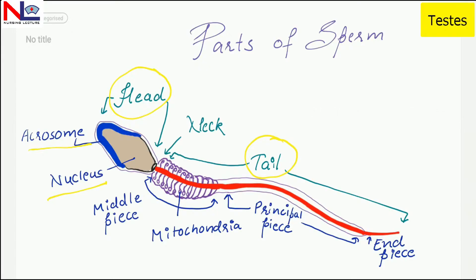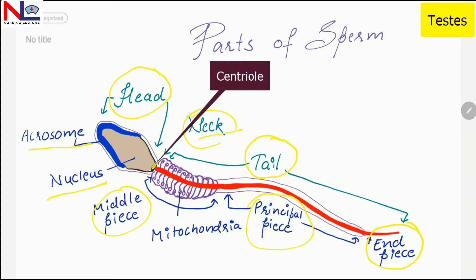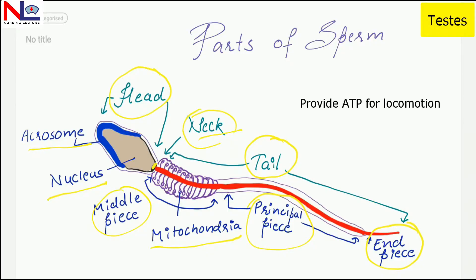The tail of the sperm is divided into the neck region, the middle piece, the principal piece, and the tapering end piece. The narrow neck region just behind the head consists of centrioles. Behind that is the middle piece, which consists of mitochondria providing energy as ATP for the locomotion of sperm so it can fertilize the secondary oocyte. The principal piece is the longest portion, and at the end is the end piece.